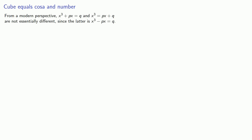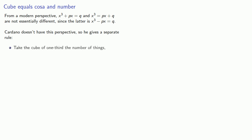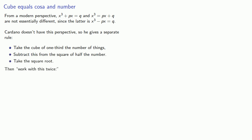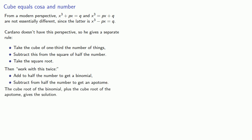How about the cube equals cosa and number? From a modern perspective, x³ + px = q and x³ = px + q are not essentially different, since the latter is x³ - px = q. But Cardano doesn't have this perspective, so he gives a separate rule: take the cube of one-third the number of things, subtract this from the square of half the number, take the square root, then work with it twice. Add to half the number to get a binomial, and subtract from half the number to get an apotome. The cube root of the binomial plus the cube root of the apotome gives the solution.